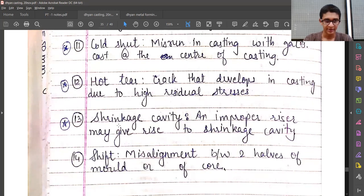Thirteenth is shrinkage cavity, also important. Improper riser may give rise to shrinkage cavity, so we should make the riser design properly.